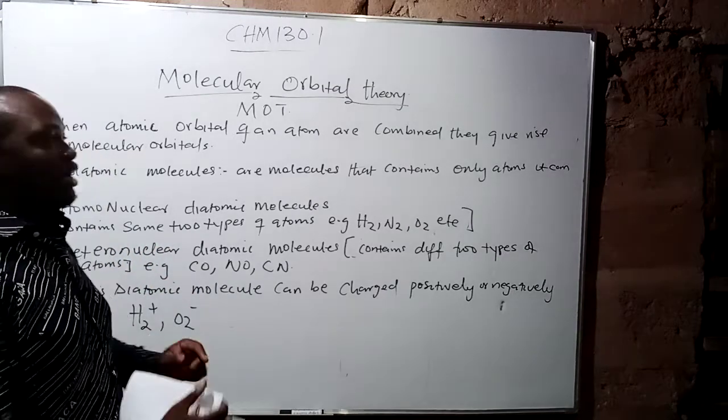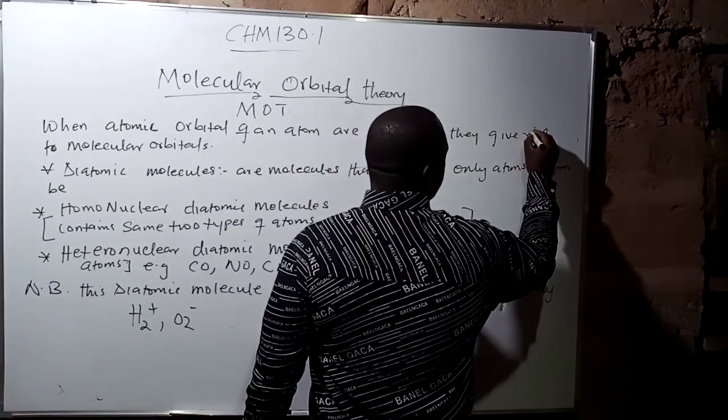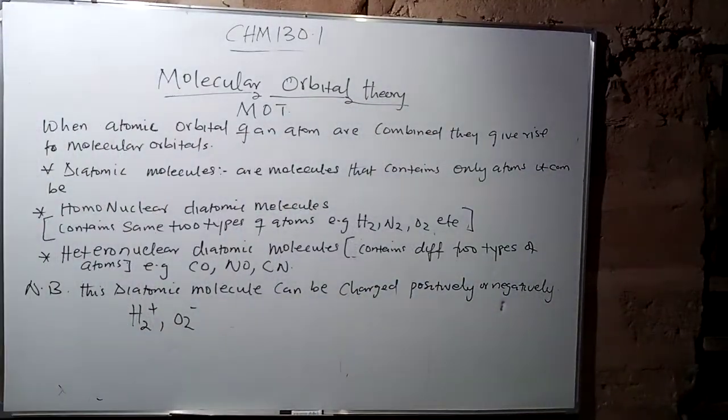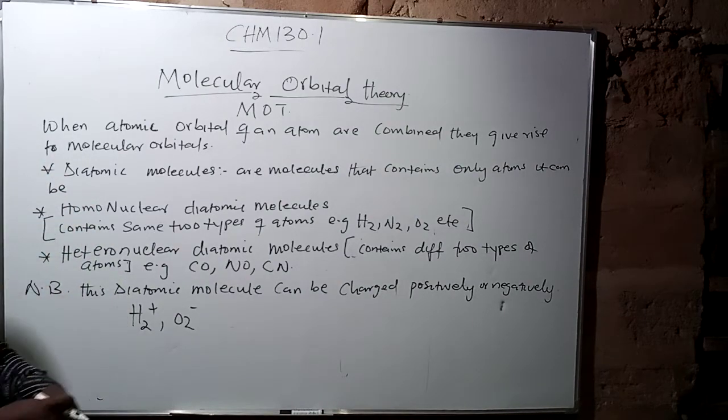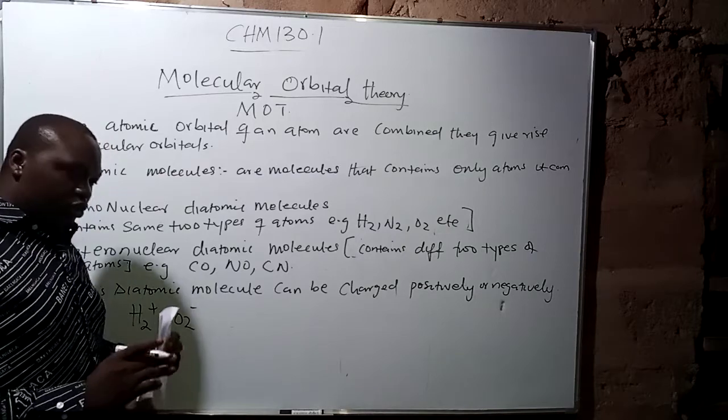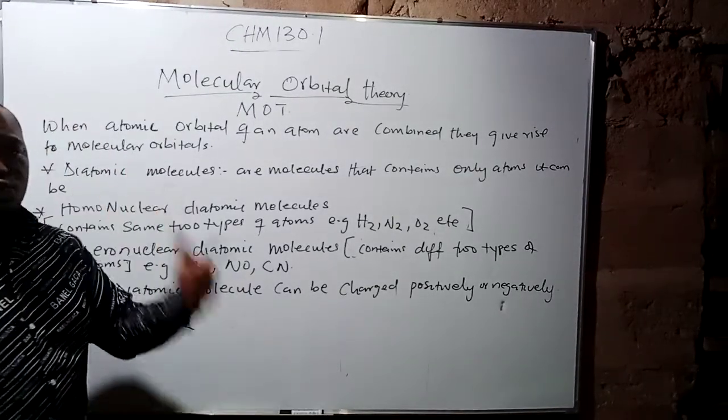When two atomic orbitals of an atom are combined, they give rise to molecular orbitals. Now, we have diatomic molecules. And whenever you hear diatomic molecules, we're talking about molecules that contain two atoms. From the word di, di is two.